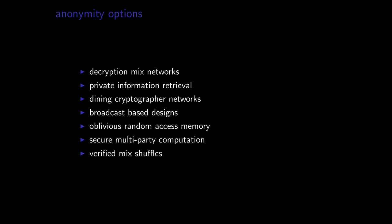There's verified mix shuffles. They're also mixed networks, but they have more computational overhead, and they have different security goals. They're designed for things like voting systems. These other designs work to prevent metadata leakage for global adversaries on the network, but they don't scale really well, and there's other design problems with them.